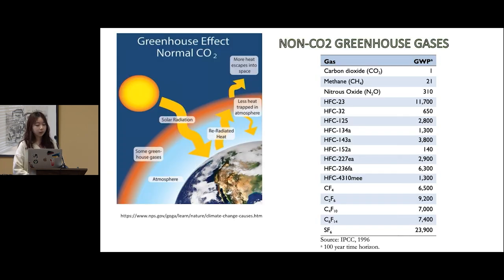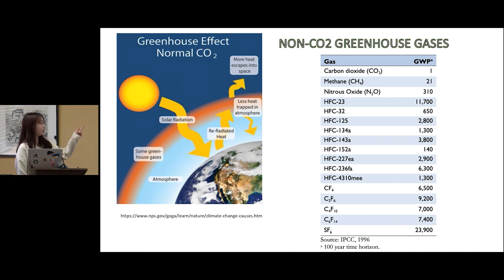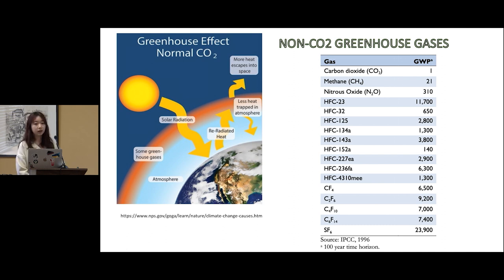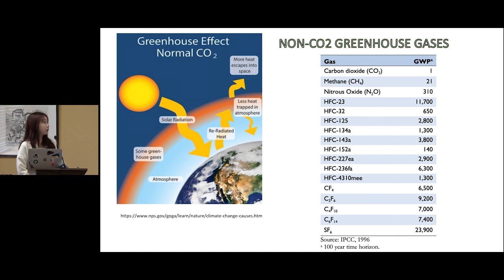Climate change is primarily caused by the accumulation of greenhouse gases in the atmosphere. These gases trap heat from the sun and prevent it from escaping back to space, gradually heating the earth's surface temperature. Among all greenhouse gases, carbon dioxide has received the greatest emphasis because of its huge quantities relative to non-carbon dioxide greenhouse gases.